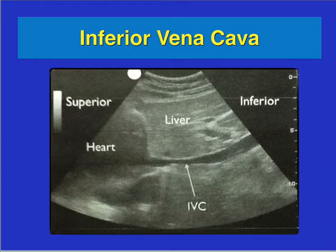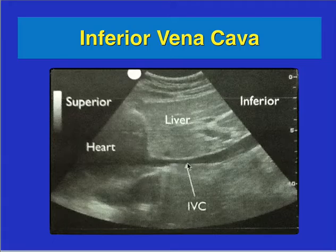If you put your ultrasound probe — and refer to the actual video that discusses how to obtain the inferior vena cava view, it's included in some of the cardiac lectures — as you put your probe in the upper epigastric area, you'll see the heart and the inferior vena cava coming out of it. You'll see liver on both sides. About one centimeter past that is where you want to measure the size.